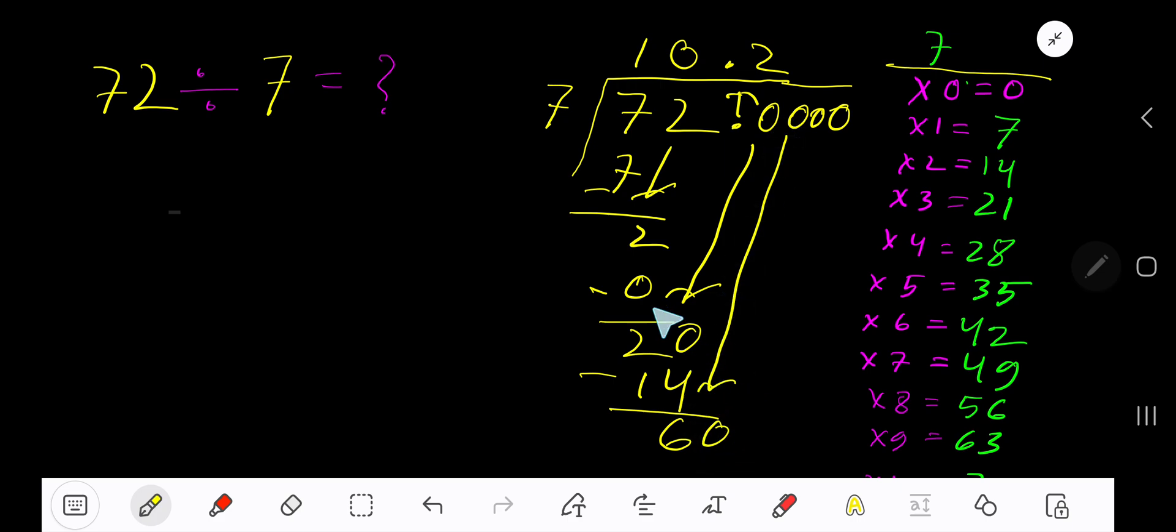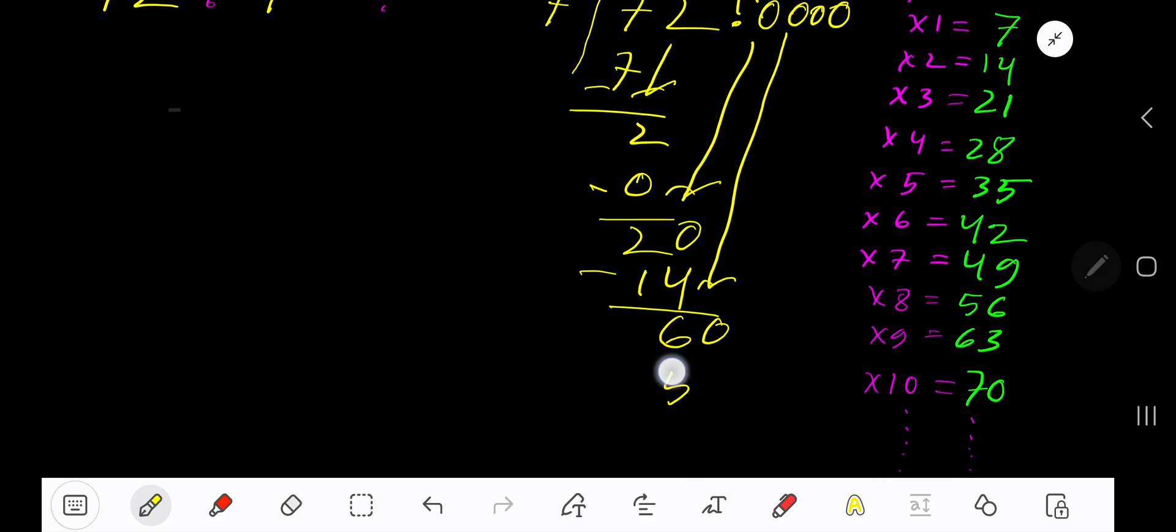Bring down another 0 to get 60. 7 goes into 60 how many times? 9 times would be 63, which is greater, so 8 times. 8 times 7 gives you 56. Subtract to get 4.